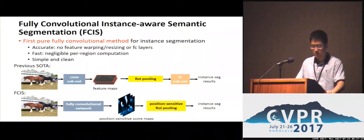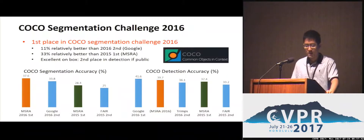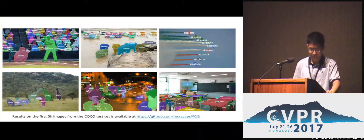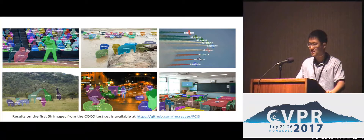The proposed method is the first pure fully convolutional solution for instance segmentation. Compared to previous state-of-the-art methods with two sub-networks, the proposed FCIS method is much faster and more accurate. Based on the proposed method, we won first place in the COCO Segmentation Challenge 2016 by a clear margin. It is worth noting that we won first place in this competition back-to-back. We have also released results on the first 5,000 images from the COCO test set at our project webpage.